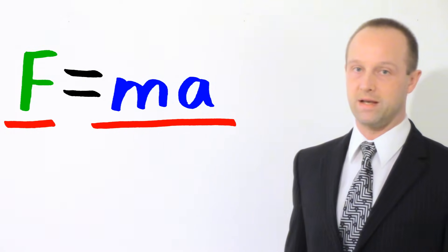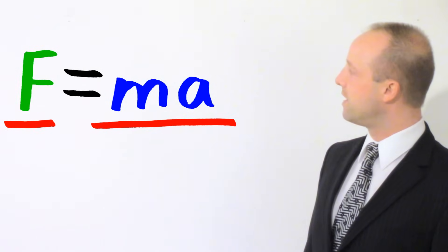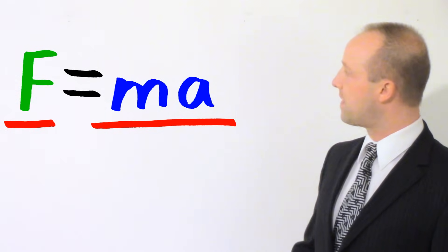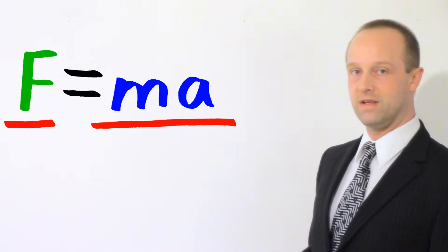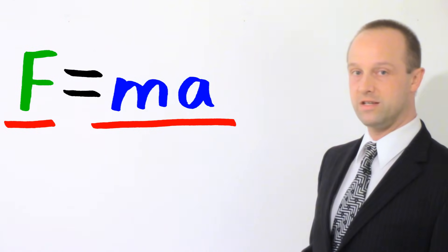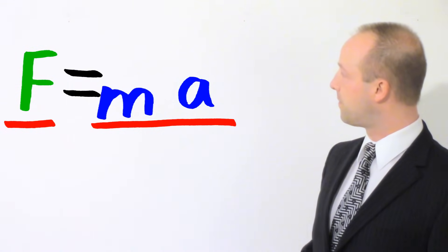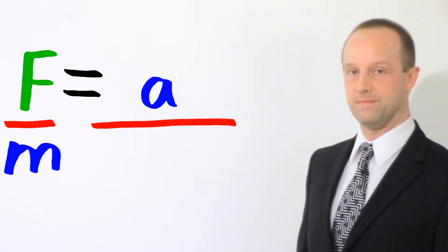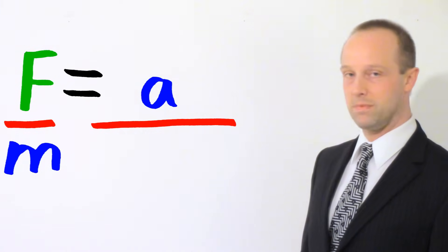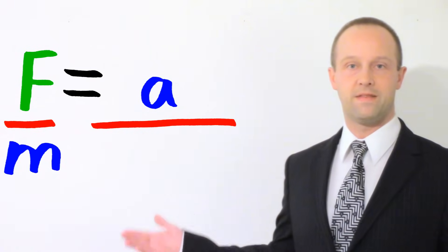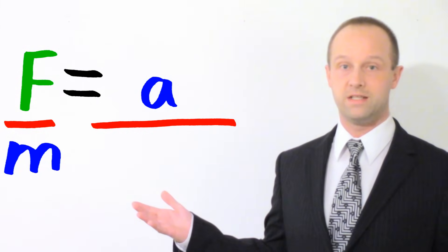Let me show you what I mean. So F equals MA. I want A all by itself. So I'm going to move that M from the right-hand side of the equation to the left-hand side of the equation. And to do that, it goes from the top of the line to the bottom of the line. So F over M or F divided by M equals A. And that's it.